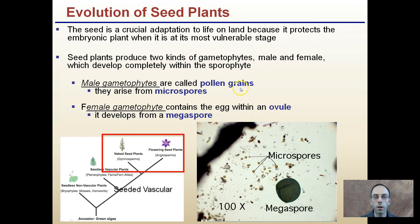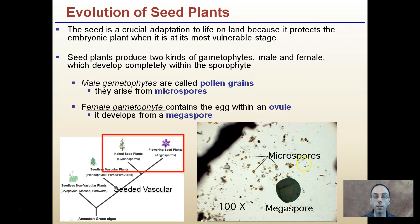A way to remember this is to think of sperm and egg. The sperm is very small compared to the egg. In this case, the sperm represents the pollen — the male portion, a very small region. The egg, or ovule — the megaspore — is much larger in comparison.